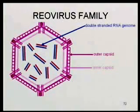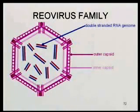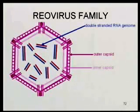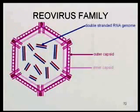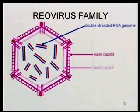Reoviruses are non-enveloped viruses. They include rotaviruses, which are a major cause of infantile diarrhea — particularly serious in small infants. They also include Colorado tick virus. The Reovirus family has a double capsid structure — a rather elaborate capsid. These are transmitted fecal-orally and have a very tough capsid structure. They have a segmented double-stranded RNA genome, and the double-walled capsid structure has an inner and outer capsid. Being icosahedral, they have 12 pentons with a rather elaborate structure.